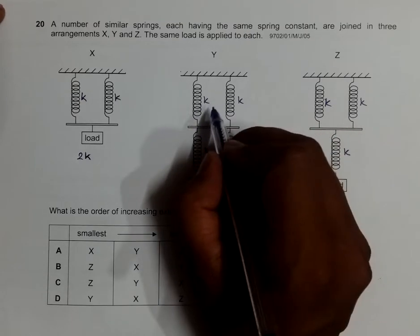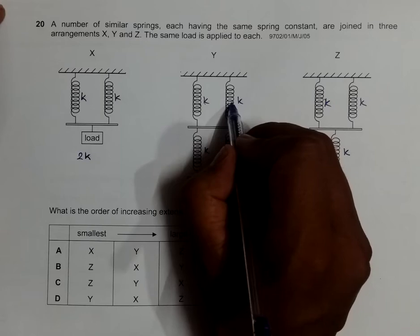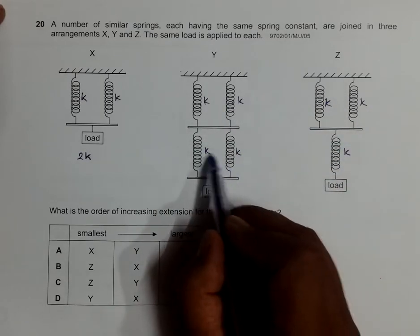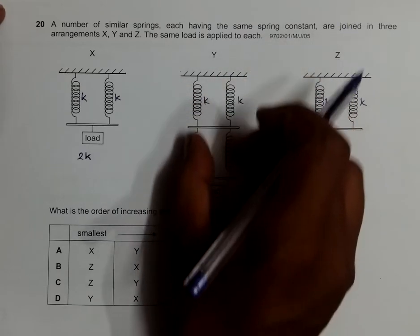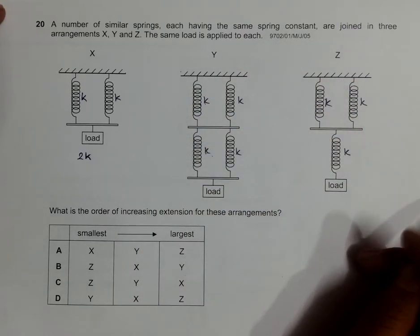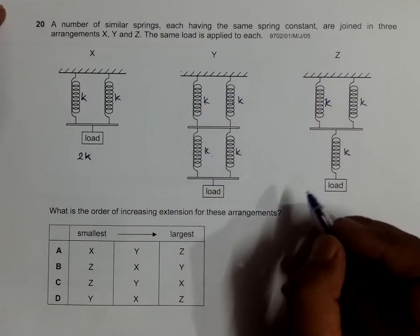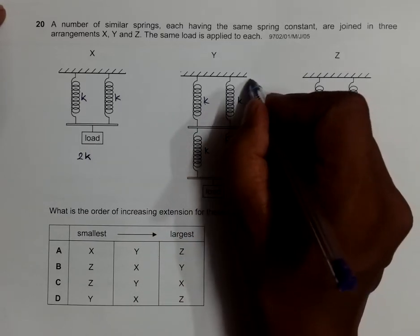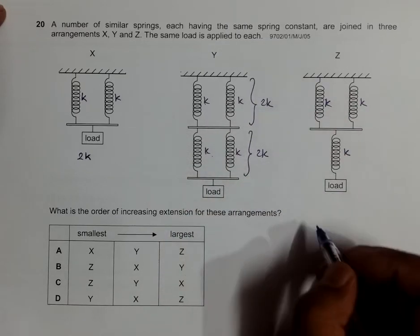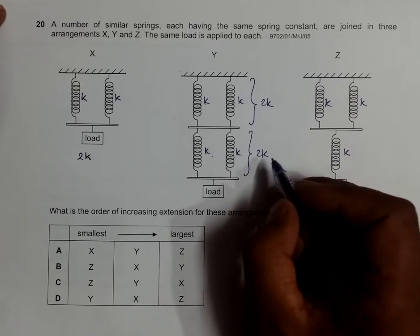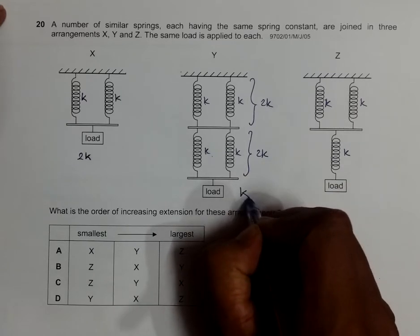In arrangement Y, they are parallel, so it should be K, K, and K equals 2K. Then it's again 2K. Since this arrangement is here, the two arrangements should be in series. So the series of 2K and 2K should be equal to K. So here the spring constant is K.